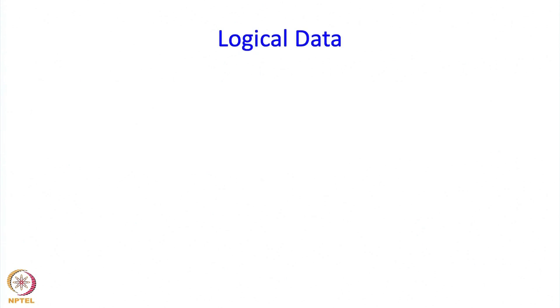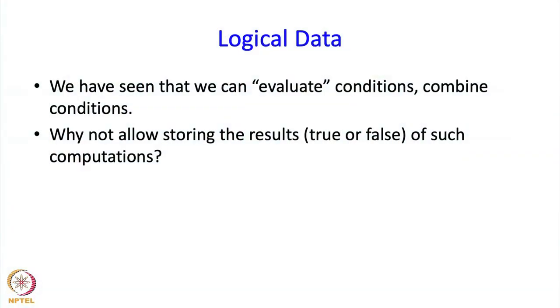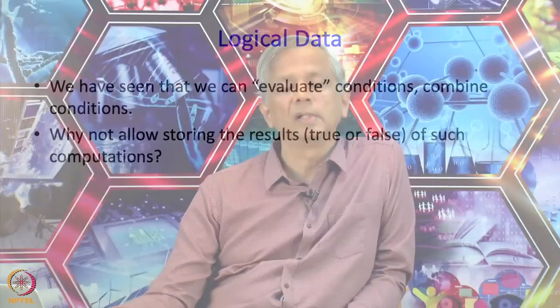The next topic I want to cover in this segment is logical data. We have seen that we can evaluate conditions and also combine them — for example, if x > 5 and y < 6. We are really performing operations on results of conditions. You might ask: why should we not allow storing the results — true or false — of such computations? If I evaluate a condition and it comes out to be true or false, can I put it in some variable?